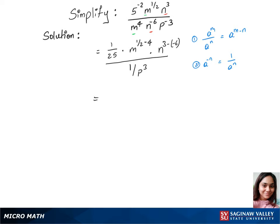And 1 over P power 3 flips up and that gives us P power 3. Our last step - we'll write this as N power 9 P power 3 over 25, and we'll bring the M power minus 7/2 down.